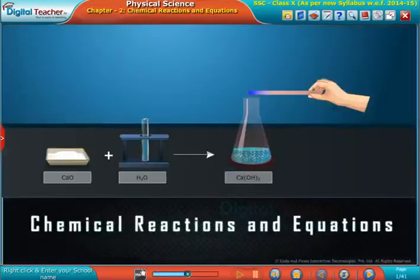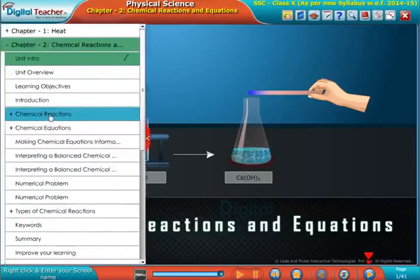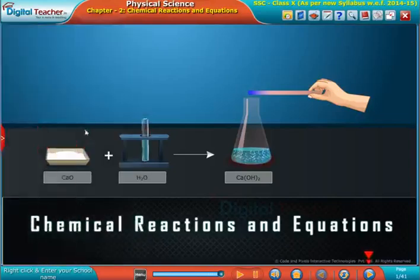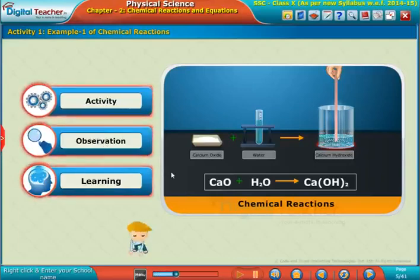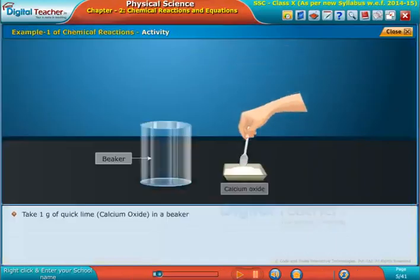Welcome to the chapter Chemical Reactions and Equations, Example 1 of Chemical Reactions. Click each tab to learn more. Take one gram of quicklime (calcium oxide) in a beaker.